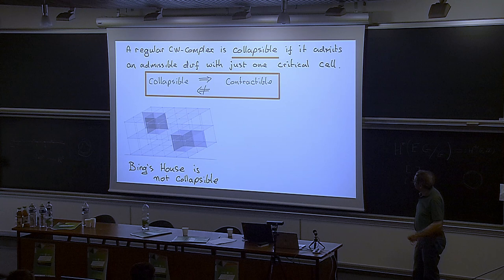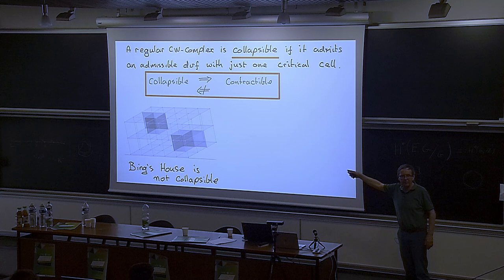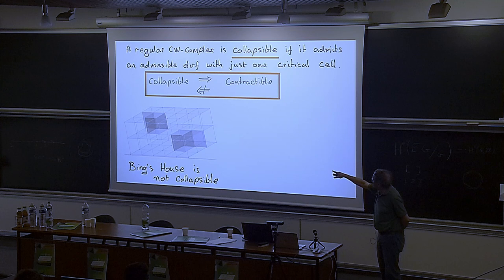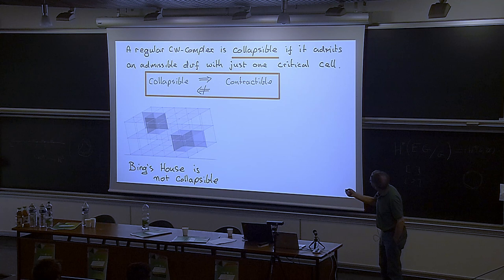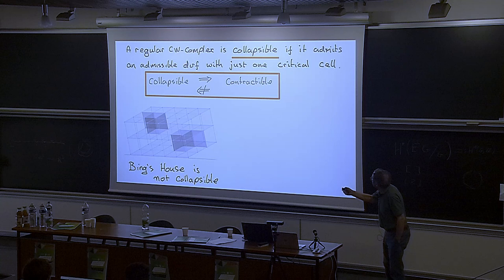Let me convince you that it doesn't always work. I have this on the computer — it's in the code on the website. There's a GAP command 'bing's house' which constructs this CW complex. Bing's house is a house with two rooms: an upstairs room and a downstairs room, where the entrance to the downstairs room is through the attic — you go down into the downstairs room — and the entrance to the upstairs room is from underneath.